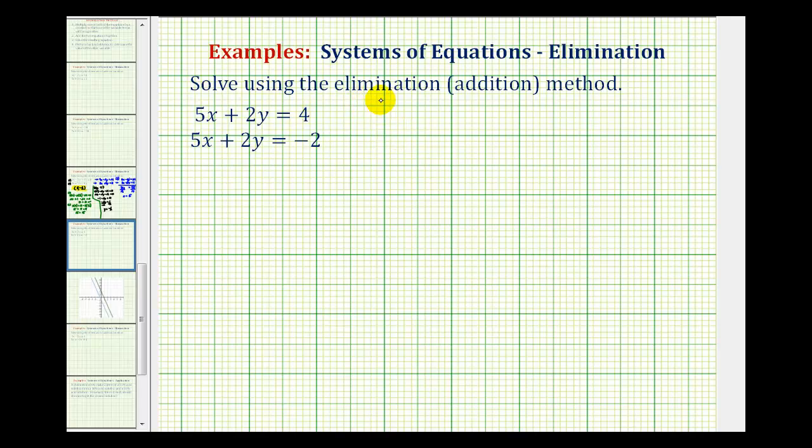The idea of the elimination method is we want to add these two equations together and eliminate either the x terms or the y terms. To sum the two equations and eliminate one of the variables, either the x terms or the y terms must be opposites.